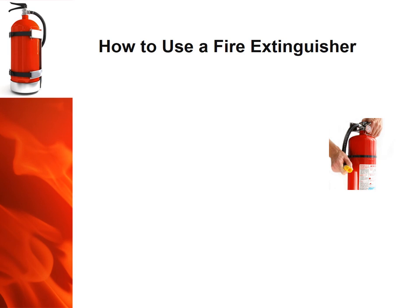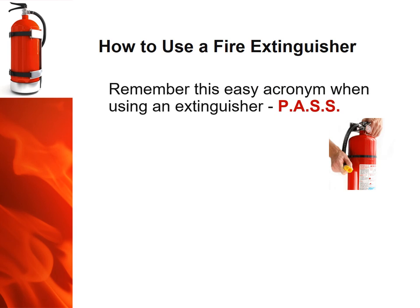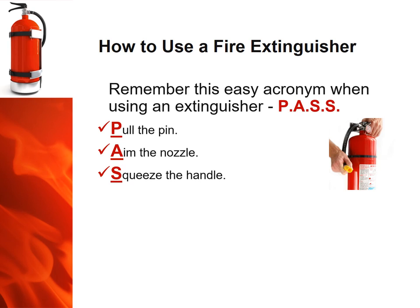Now let's remember how to use a fire extinguisher using the easy acronym PASS. P — pull the pin. A — aim the nozzle. The first S — squeeze the handle. The second S — sweep side to side at the base of the fire. PASS.